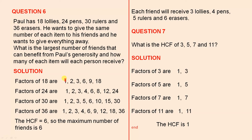Let's find the factors of 18, 24, 30 and 36. The factors of 18 are those numbers. The factors of 24 are those numbers — we have 24 pens. The factors of 30 are these numbers — we have 30 rulers. And the factors of 36 are these numbers because we have 36 erasers. The HCF is the highest number that occurs in all four groups. This is the maximum number of friends. So the maximum number of friends that can receive all the prizes is 6.